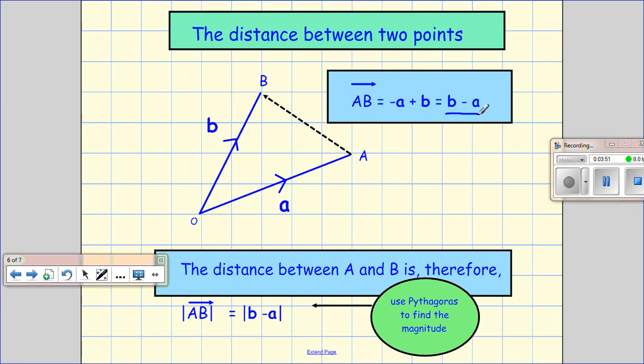And if you remember when, in a previous video, we looked at if we were to take B take away A, what you'd do is take away the components of X from each other, the components of Y from each other, and the components of J from each other.